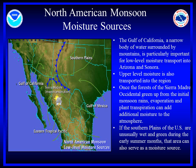Finally, if the southern plains of the U.S. are unusually wet and green during the early summer months, that area can also serve as a moisture source. This combination causes a distinct rainy season over a large portion of western North America, which develops rather quickly and sometimes dramatically.